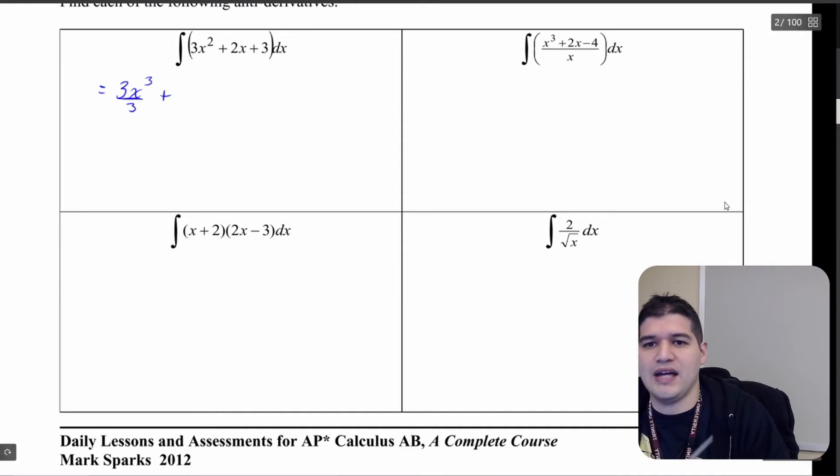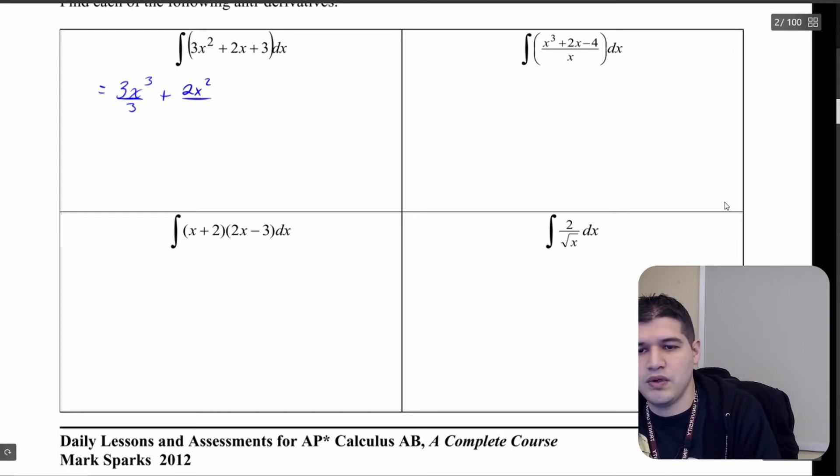Here I'm going to add 1 to the exponent, so 2x squared and divide by that new result. Here I'm going to add 1 to the exponent, so 3x to the first, and divide by 1. Now we always need to add in a constant plus C.